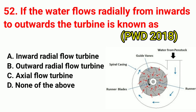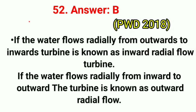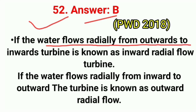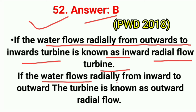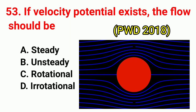Question No. 52/53. If the water flows radially from inwards to outwards, the turbine is known as? Correct answer is option B. Also, if velocity potential exists, the flow should be? Correct answer is option C: irrotational.